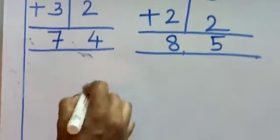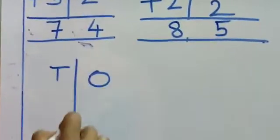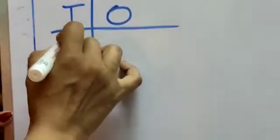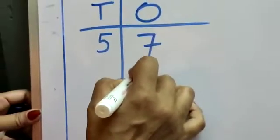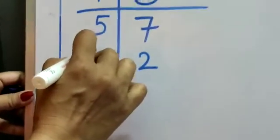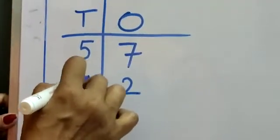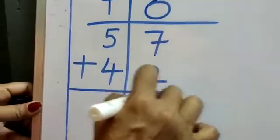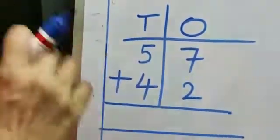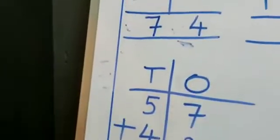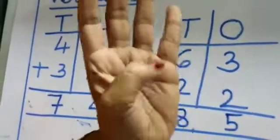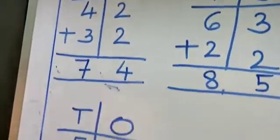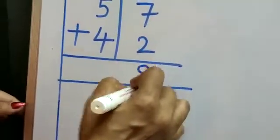Let us do one more. Now, count with me. 7 plus 2, how much? 7 let me keep here. After 7, 8, 9. Answer is 9.